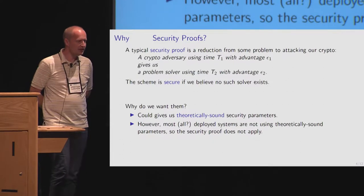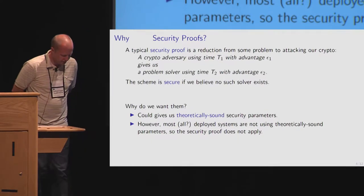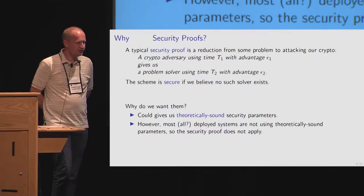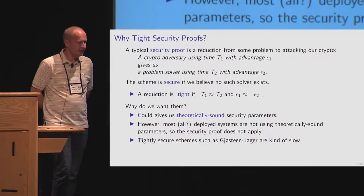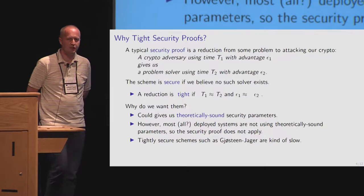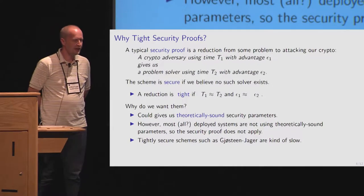If you want a really big t2, then you need a huge t1, and you have to choose accordingly. One approach is what we call tight security, where t1 and t2 are essentially the same, because then you don't have these problems. But this tends to result in slow schemes.